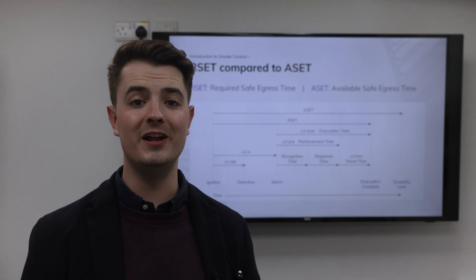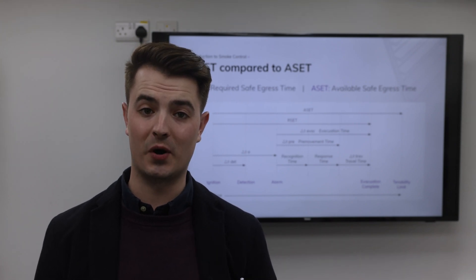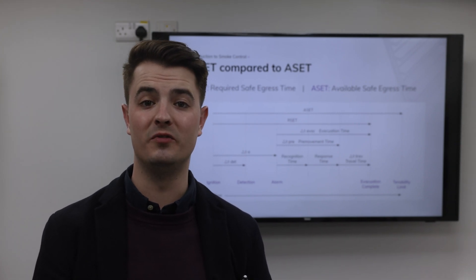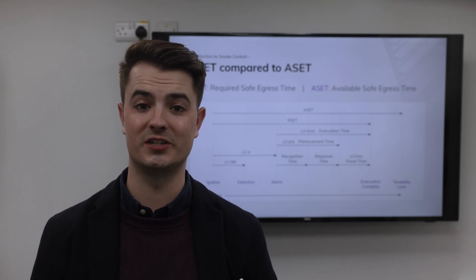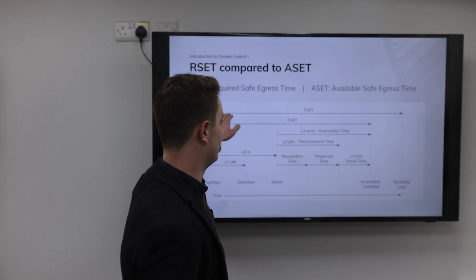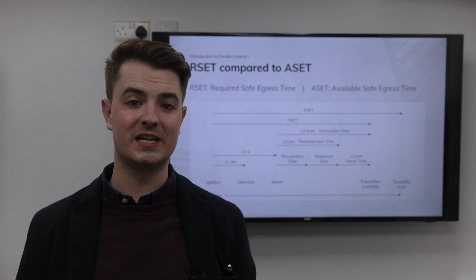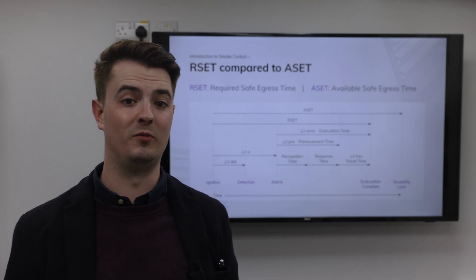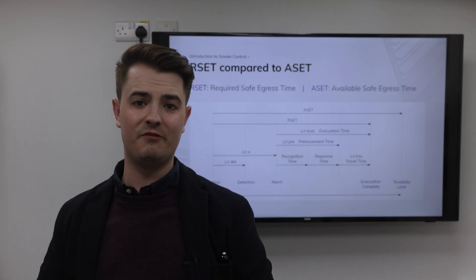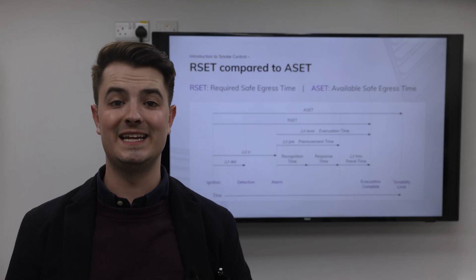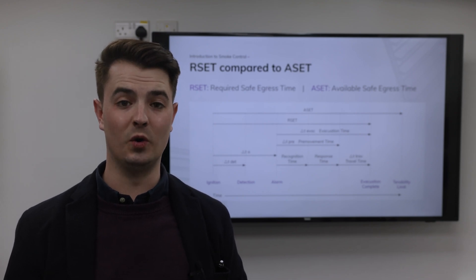ASET and RSET is a common fire engineering tool used to analyse the conditions in a building in the event of a fire. The basic aim of this approach is to show that the calculated time before conditions become untenable — which is the Available Safe Egress Time, or ASET — always exceeds the required time to safely evacuate the building, the Required Safe Egress Time, or RSET. If ASET exceeds RSET, then safe evacuation of the building is considered always possible.